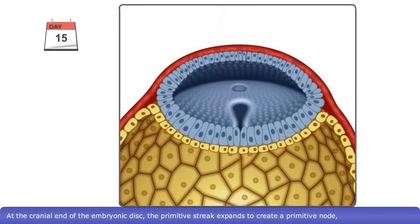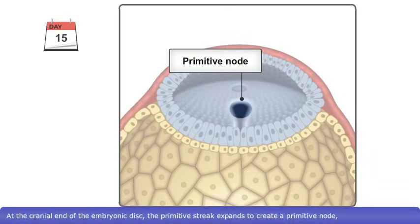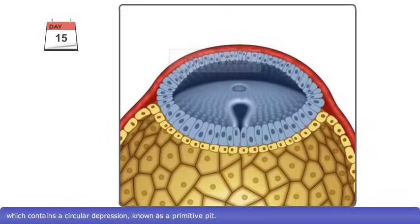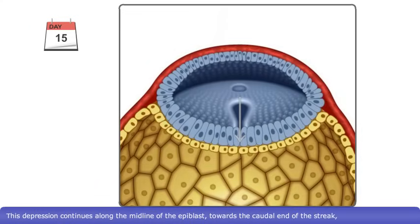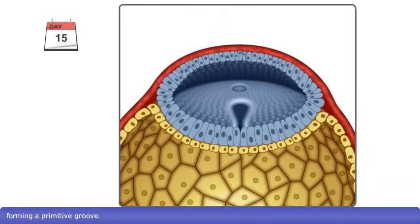At the cranial end of the embryonic disc, the primitive streak expands to create a primitive node which contains a circular depression, known as a primitive pit. This depression continues along the midline of the epiblast towards the caudal end of the streak, forming a primitive groove.